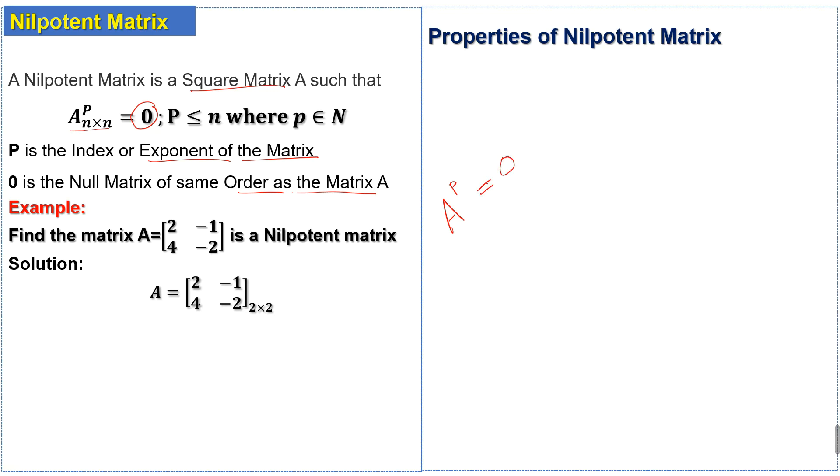Now we solve an example related to this. Find whether the matrix A is a nilpotent matrix. We have a matrix A of order 2 cross 2 and need to check if it's nilpotent or not. First we take P equal to 2.